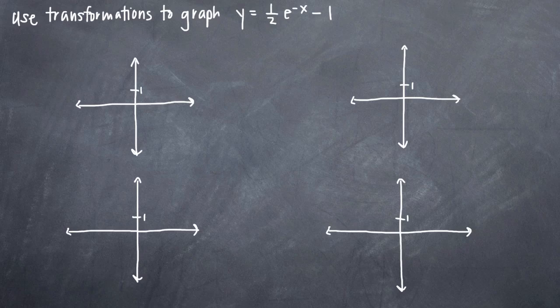In this particular problem, we've been asked to use our knowledge of transformations to sketch the graph of y equals 1/2 e to the negative x minus 1. And all I want to show you here is that you can sketch the graph of a function that you know and then use your knowledge of transformations to build out the rest of your function.